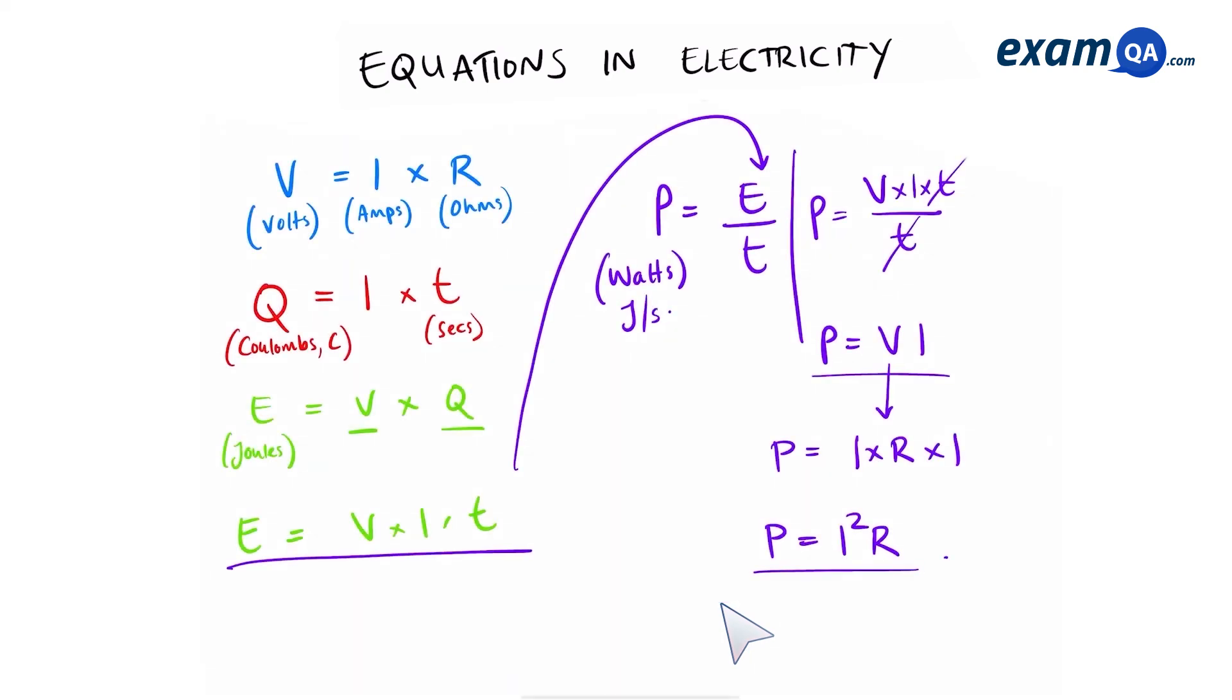So in total, we have seven equations that we need to remember for electricity.